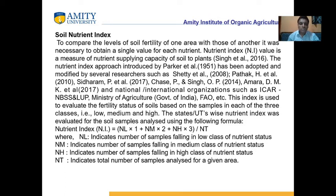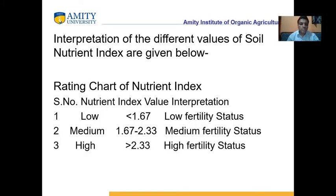The index value is rated as follows: if the value is lower than 1.67, it is called low fertility status. If the value is between 1.67 and 2.33, it is called medium fertility status. If the value is higher than 2.33, it is called high fertility status.